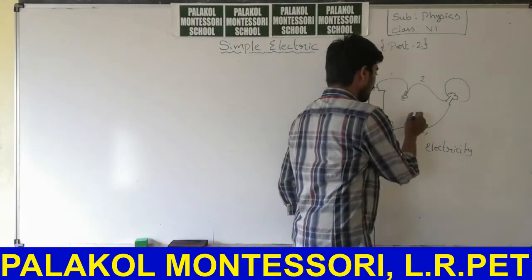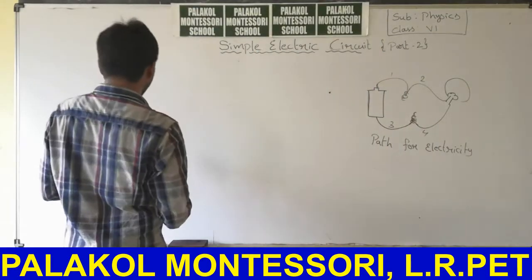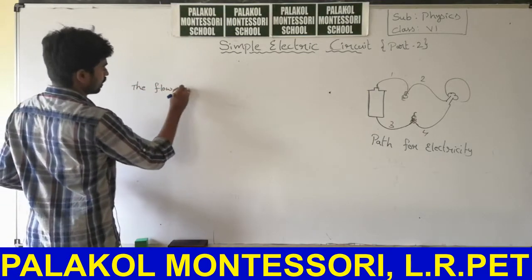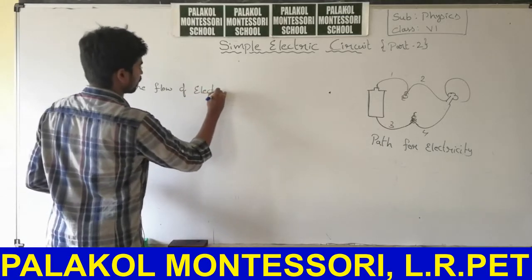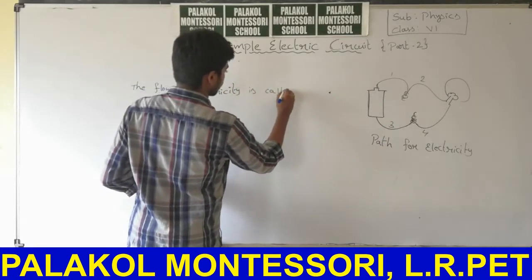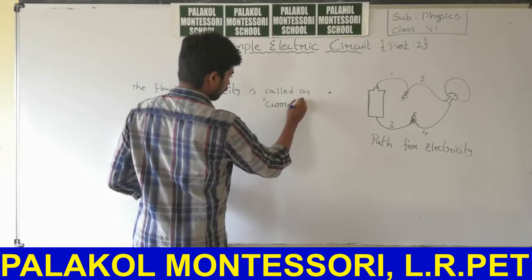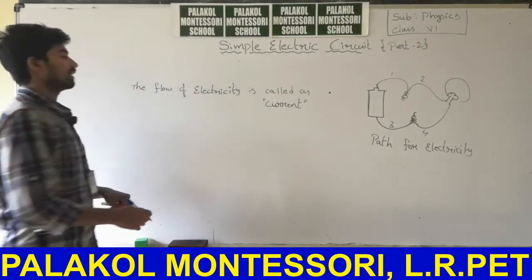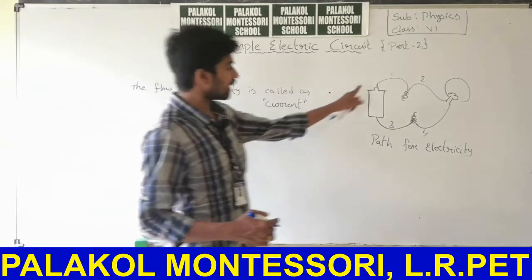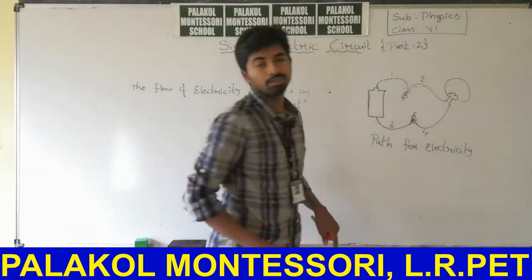The flow of electricity is called as current. It is a very important definition. The flow of electricity is called as current. And these wires will provide a path for electricity — the electricity will move like this, completely move like this.